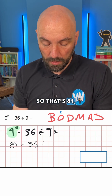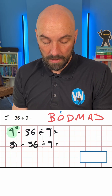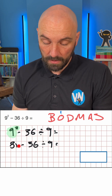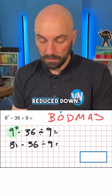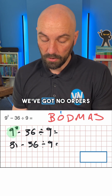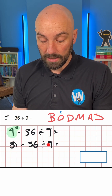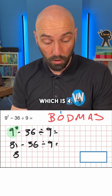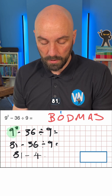So that's 81 take away 36 divided by 9. Now I would go through the BODMAS acronym again. Are there any brackets? No. Any orders? No. Do we have any division or multiplication? Yes we do. So we're going to do 36 divided by 9, which is 4. So again we're going to rewrite the question: 81 take away 4.